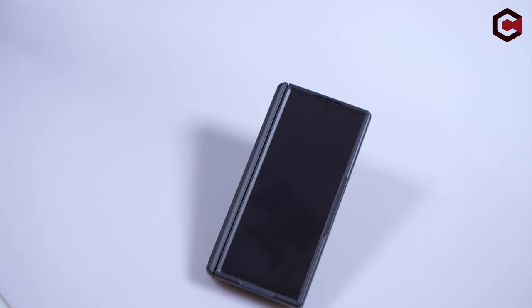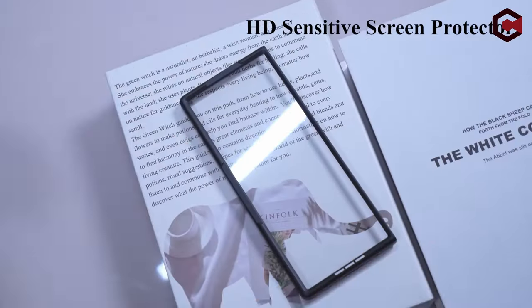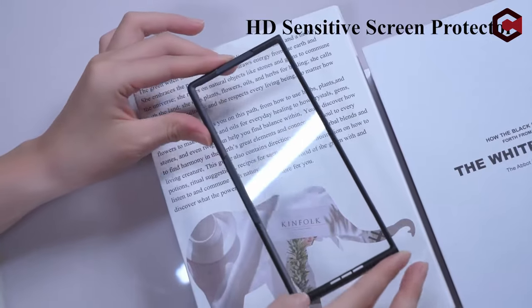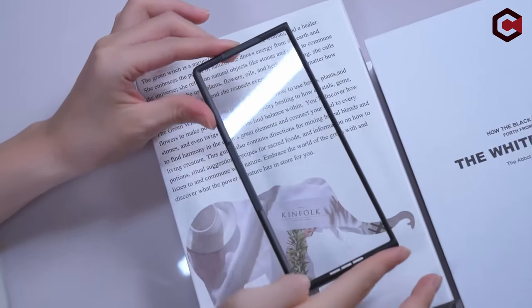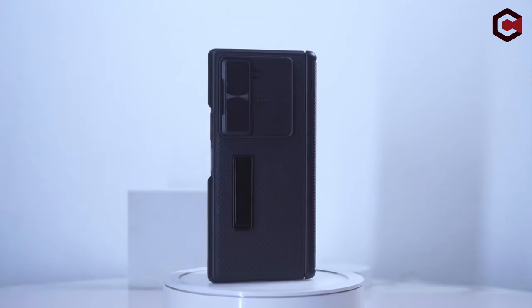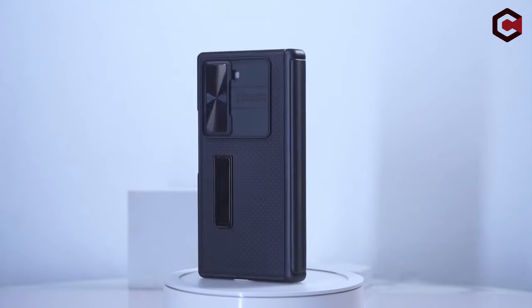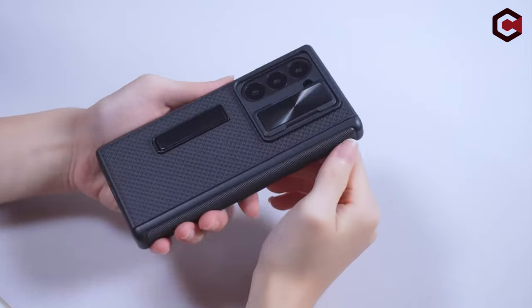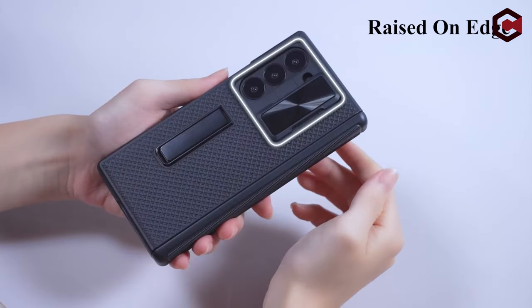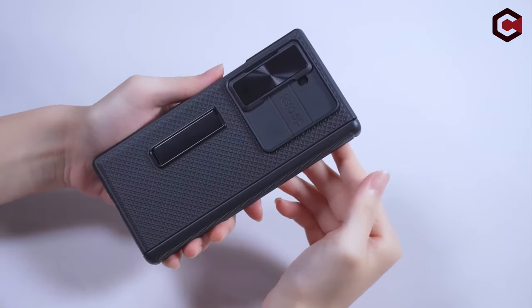The case incorporates a built-in metal stand, adjustable for horizontal viewing, enhancing convenience for media consumption and study. It features a high-sensitivity HD screen protector and a sliding camera cover, ensuring dual protection against scratches and accidental damage. Temdan prioritizes comfort with its skin-friendly, electroplated PC material and ergonomic design, offering a slim, non-slip grip that minimizes fingerprints.